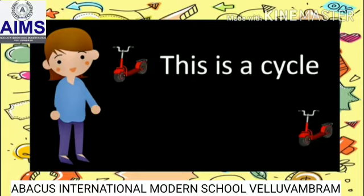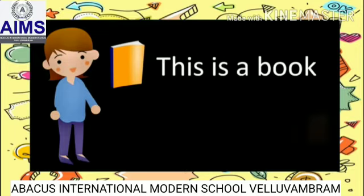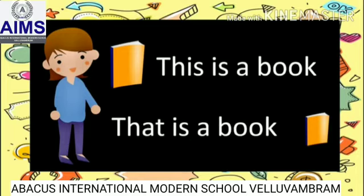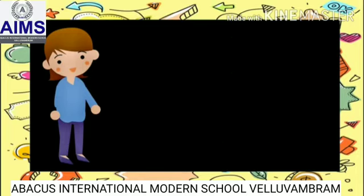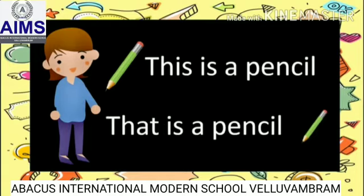Here is a cycle — it's far from me. So we say 'that is a cycle'. Look here: this is a book and that is a book. This is a pencil — it's near. That is a pencil — it's far from me, so that is a pencil.